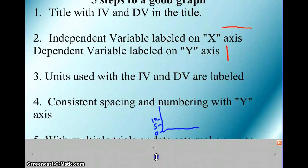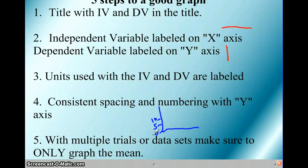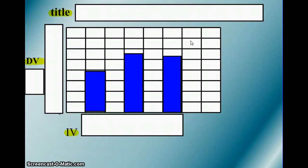The fifth one, if you have multiple trials or datasets, make sure to only graph the mean. I've seen students struggle before trying to graph every single trial and then when they get done, they really can't tell me anything about the graph or what it means. So make sure you only graph the mean of the data if you have multiple trials or multiple sets of data. Mean is like the average. Same thing. So let's look at a graph.